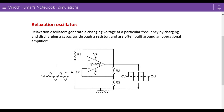In this video we are going to see how to simulate the relaxation oscillator using an op-amp — the operational amplifier — in PSpice software. The relaxation oscillator generates a changing voltage at a particular frequency by charging and discharging a capacitor through a resistor. The capacitor is connected to the inverting terminal of the op-amp, and there is feedback connected to the negative and positive terminals. This is the circuit we are going to simulate in PSpice.